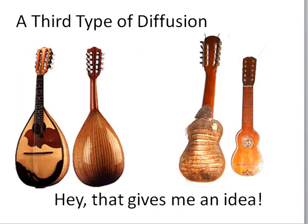The third type of diffusion — alongside expansion and relocation — is stimulus diffusion. This is the idea that you keep the basic function but may change the materials or the idea somewhat. For example, here is a mandolin from Turkey, and then a similar instrument subsequently created in South America from an armadillo.